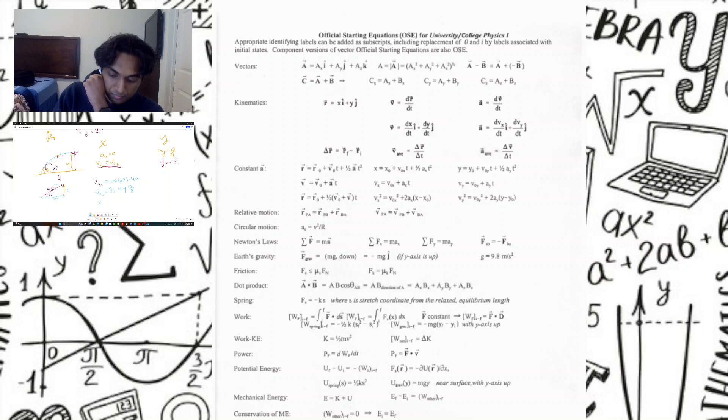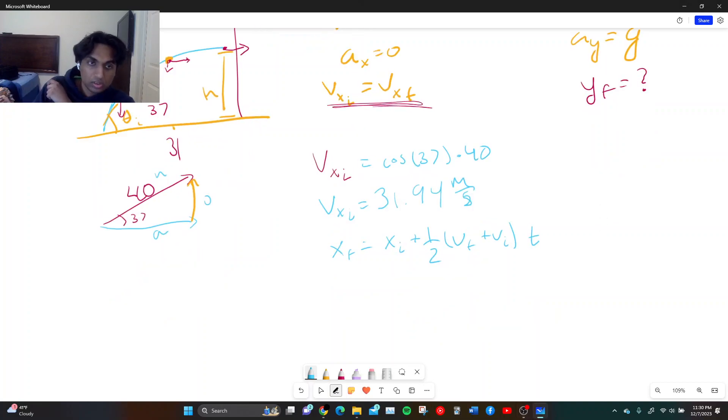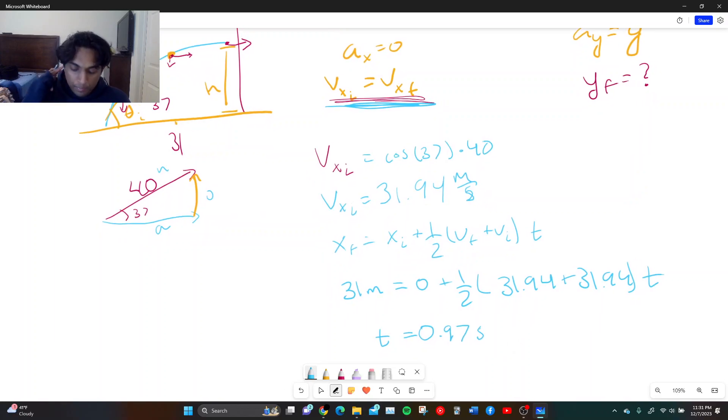Remember, that can be rewritten as x final is equal to x initial plus one half velocity final plus velocity initial all over two times time. Well, what is our x final? Our x final is 31. So 31 meters is equal to x initial zero plus one half velocity final. Remember, velocity final and velocity initial are the exact same thing. So velocity final will be 31.94 plus 31.94 times time. Solving this out for time, you get a time of 0.97 seconds.